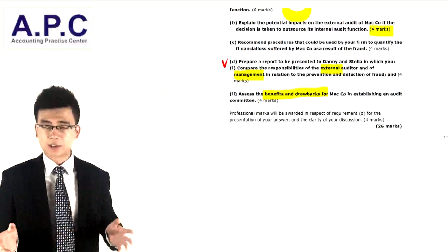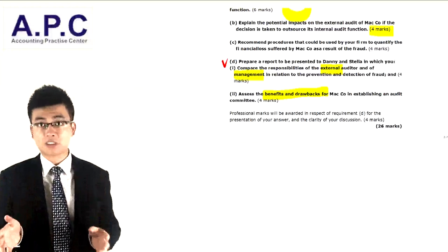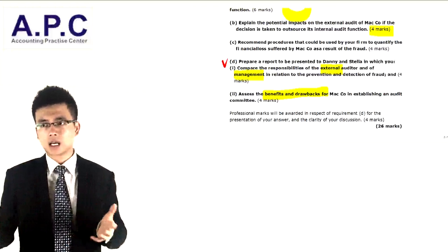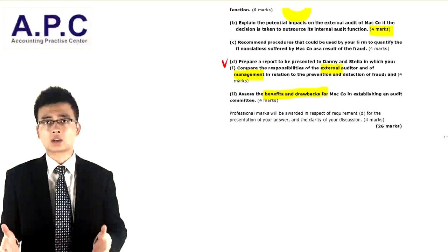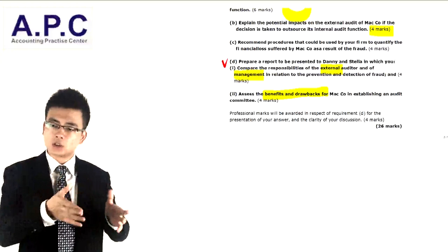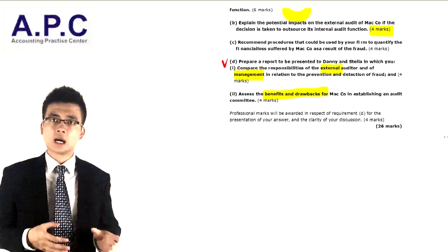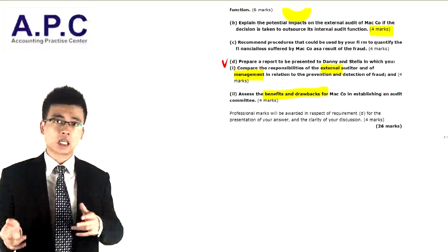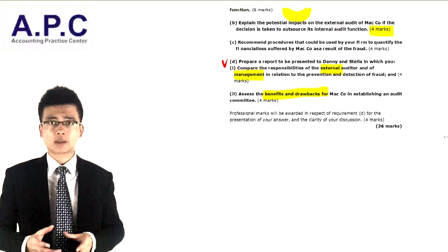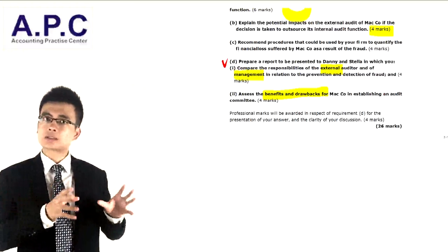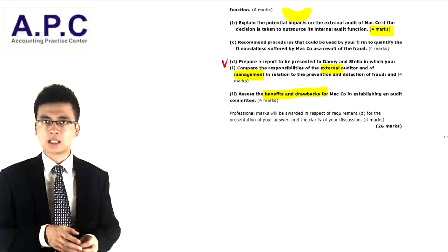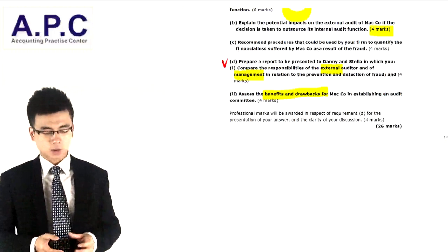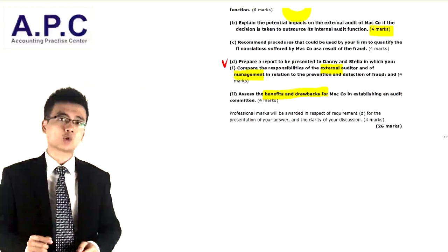What are the benefits of establishing an audit committee? It will be more professional — audit committees are experts from outside, which gives a fresh perspective. They oversee management performance and can cooperate with internal and external auditors. Any fraud or mistakes made by management are reported to the audit committee, which requires management to correct them. But what about the drawbacks? The audit committee can be quite expensive, as all members are experts.